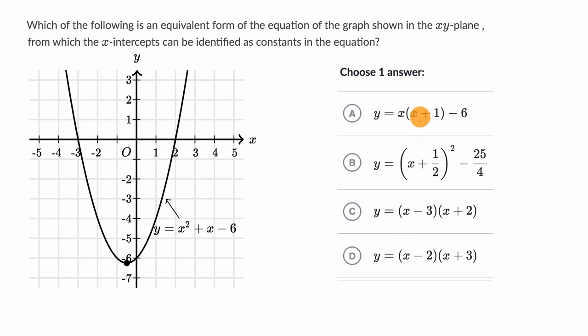We want to find an equation where if we graph it, we get this parabola right over here, and we want it to be in the form from which the x-intercepts can be identified as constants in the equation. Well, let's look at the x-intercepts here.